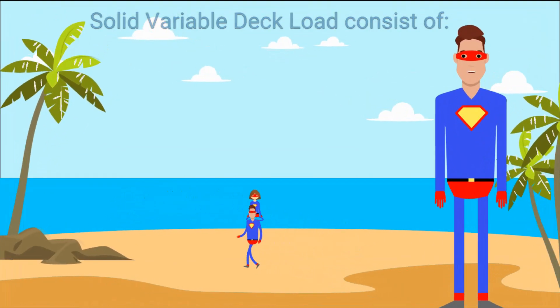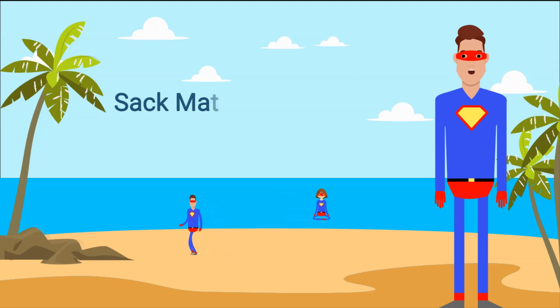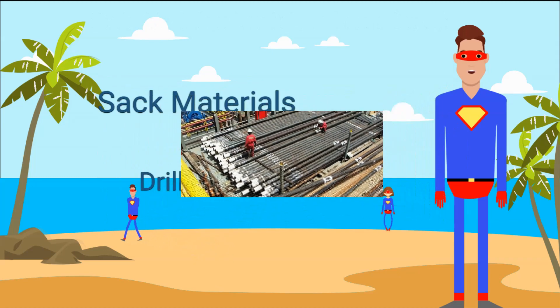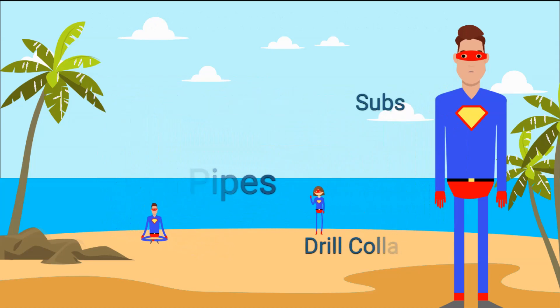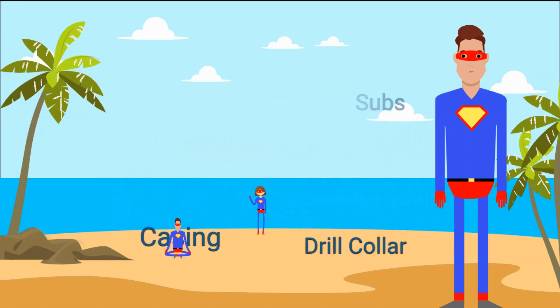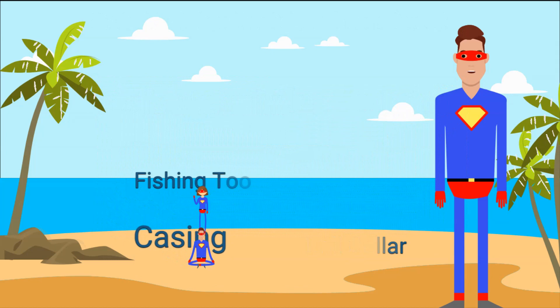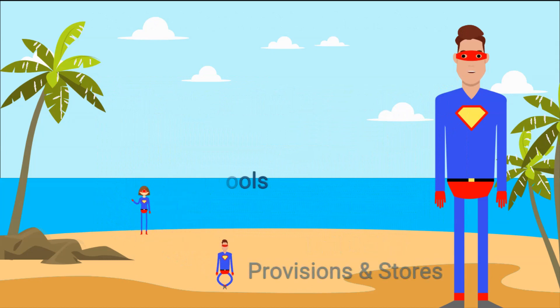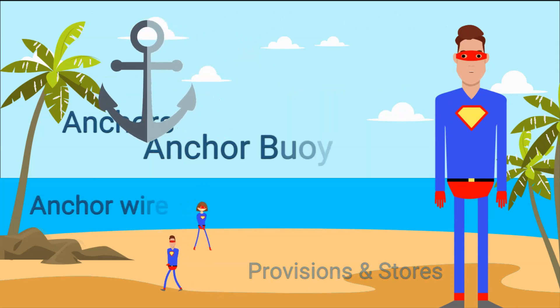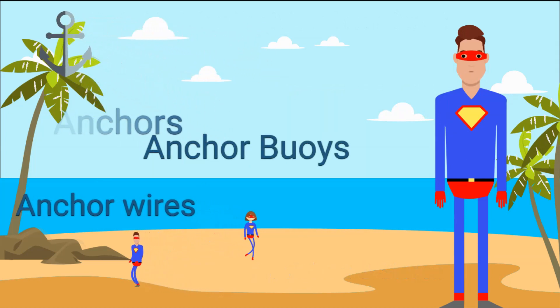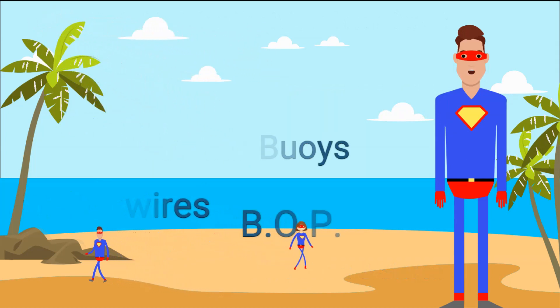Solid Variable Deck Load consists of sack materials, drill pipe, subs and drill collar, casing, fishing tools, provision and stores, anchor, anchor wires, anchor buoy, blowout preventer (BOP) onboard the jackup rig.